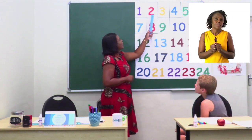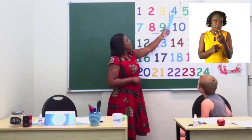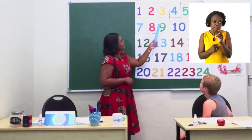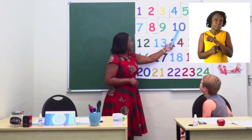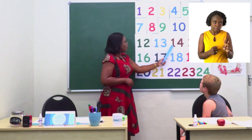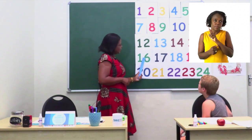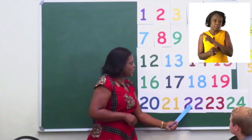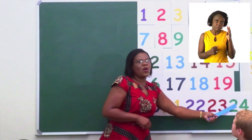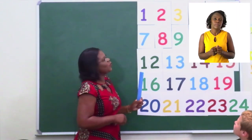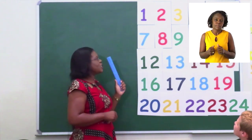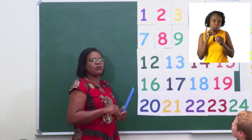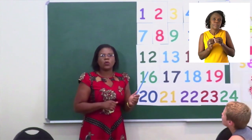The ones that I'll be pointing: 2, 4, 6, 8, 10, 12, 14, 16, 18, 20, 22, 24. Thank you, there you got it. You have to always keep one number in between, and the next one is the one that you have to count when you are counting in two.